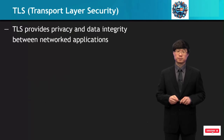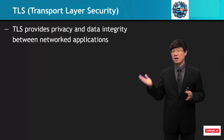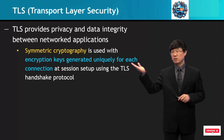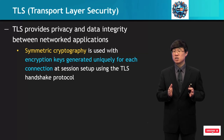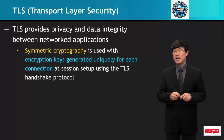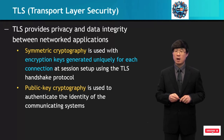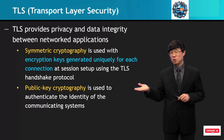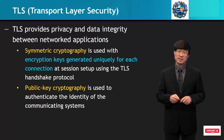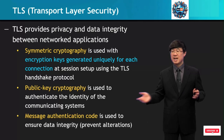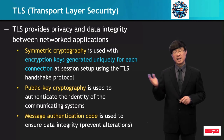Extensions in the future will occur. TLS provides privacy and data integrity between network applications. It uses symmetric cryptography and uses encryption keys generated uniquely for each connection. At session setup, the TLS handshake protocol is used to set up these encryption keys. Public key cryptography is used to authenticate the identity of the communicating system. In addition, a message authentication code is used to ensure data integrity — to prevent alterations — and this is processed by TLS as well.